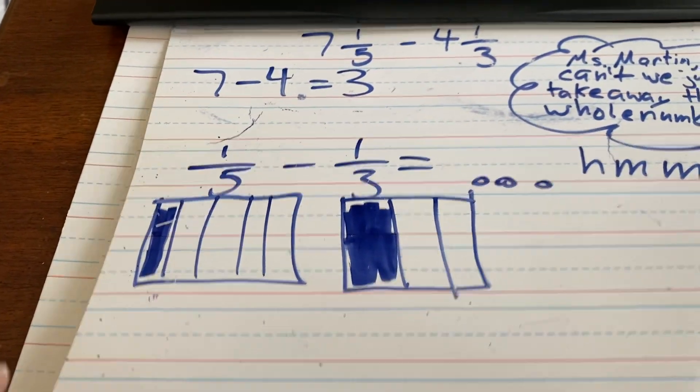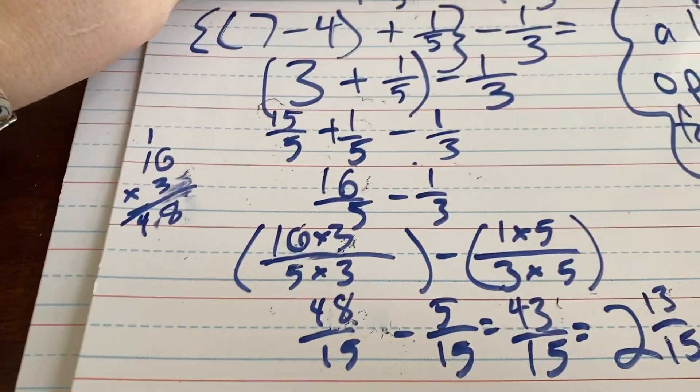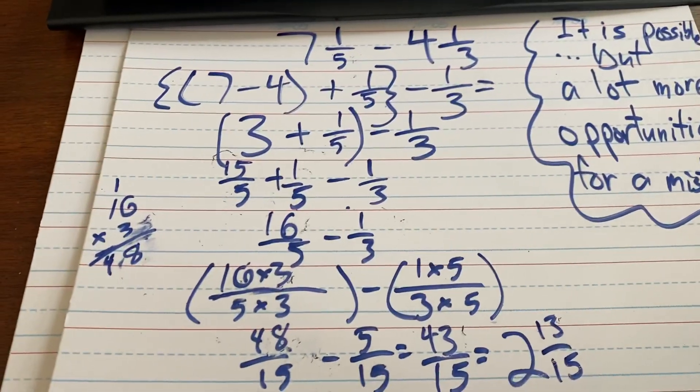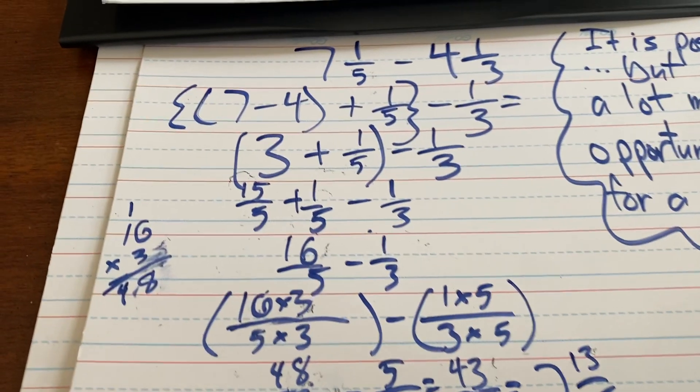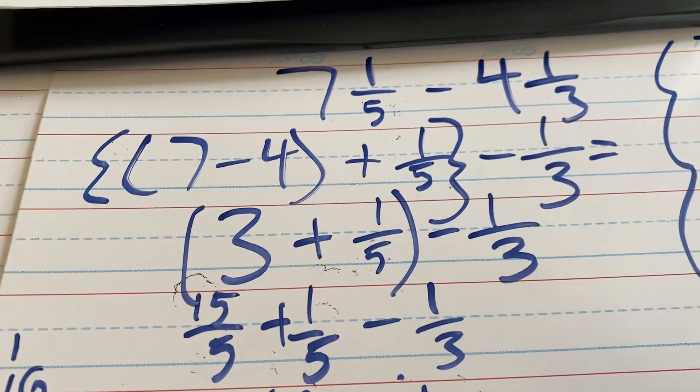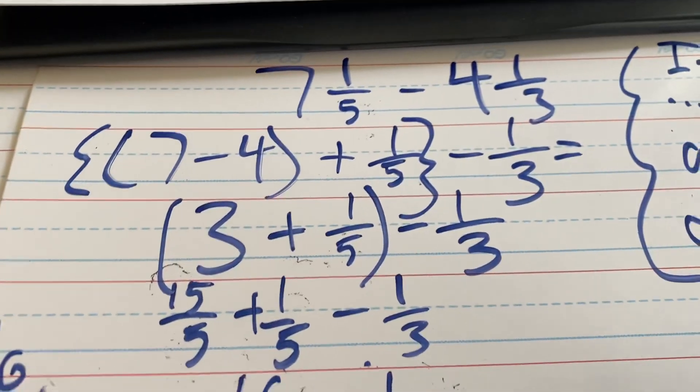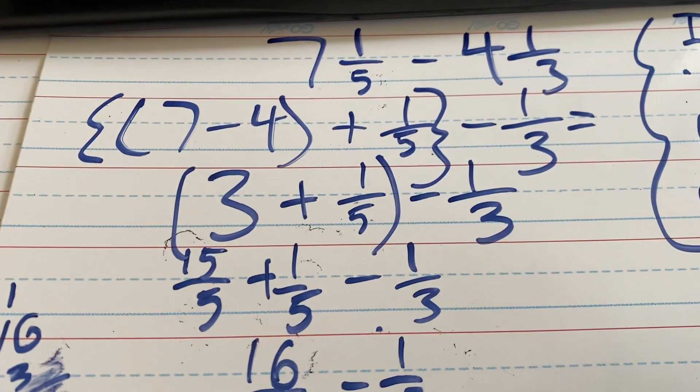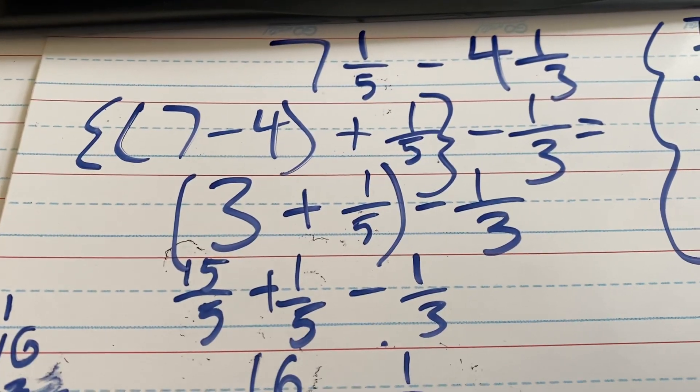The long way, it is doable, but it has a lot more opportunities for a mistake. So, for example, here's how I did it, and I know this is a lot more work than what you guys have done. That's why I didn't show you this way in the first video. So, 7 minus 4, right? That gives us 3.